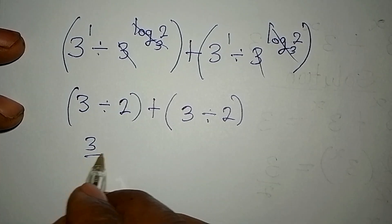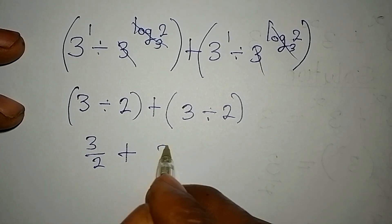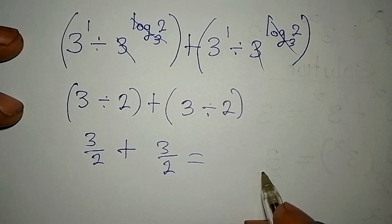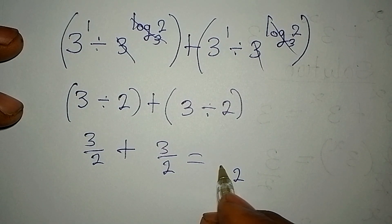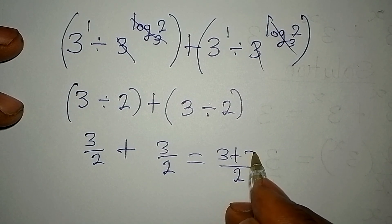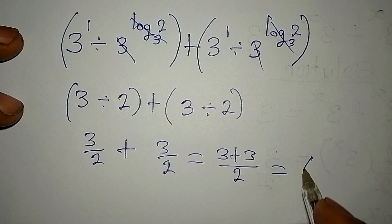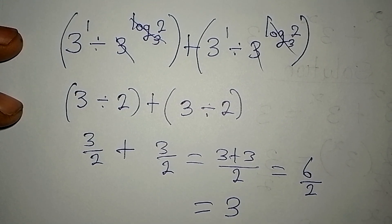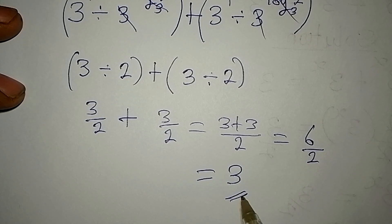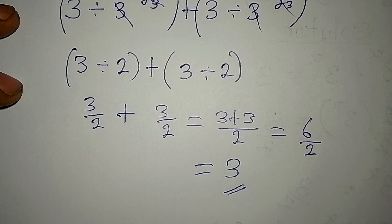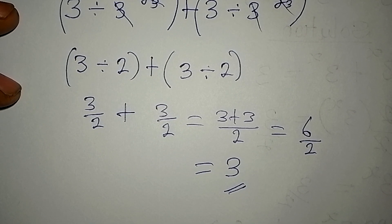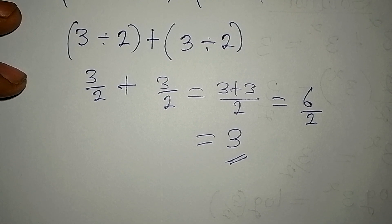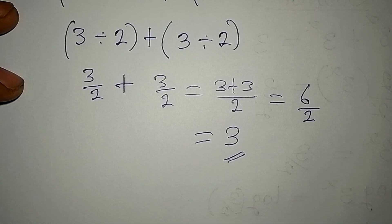Do you know that this is the same thing as 3 over 2 plus 3 over 2? So in this case we'll get the LCM, which is 2, then we have 3 plus 3, and this gives us 6 over 2. And 6 over 2 is 3 — remember it is 3 we had on the right-hand side of the equation. Thank you for watching, and if you love this video subscribe to my channel and share with your friends.